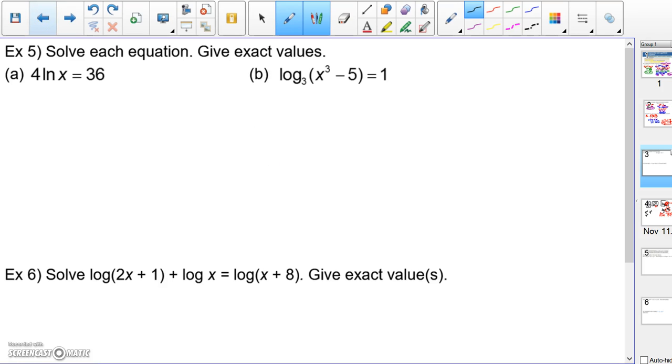So we go back and look at some examples. Solve each equation, give exact values. Now, it doesn't tell you that you have to look at the domain, but you're going to have to pay attention to that. Mostly, we're just isolating the variable here. Divide by four, you get natural log of x equals nine.